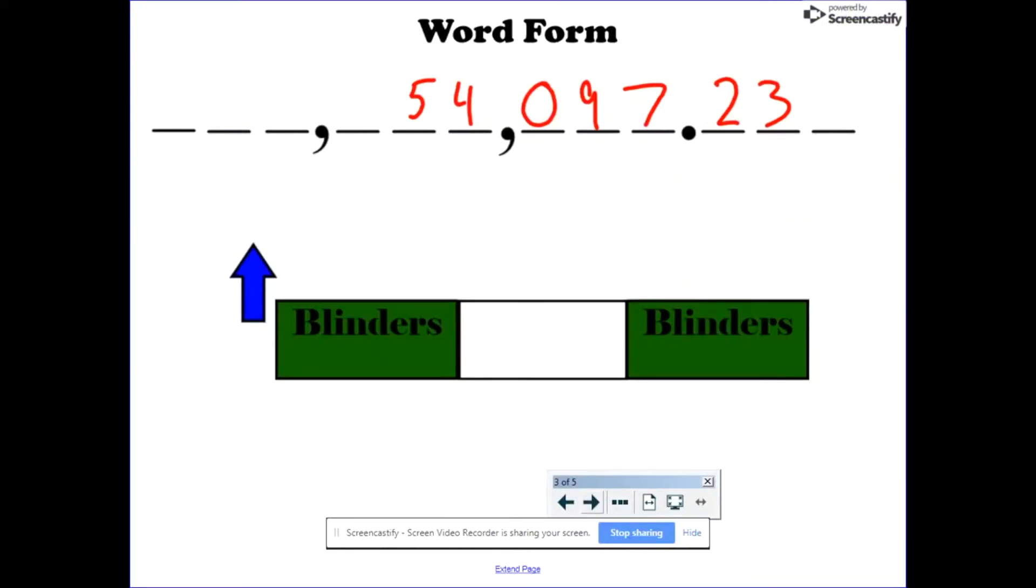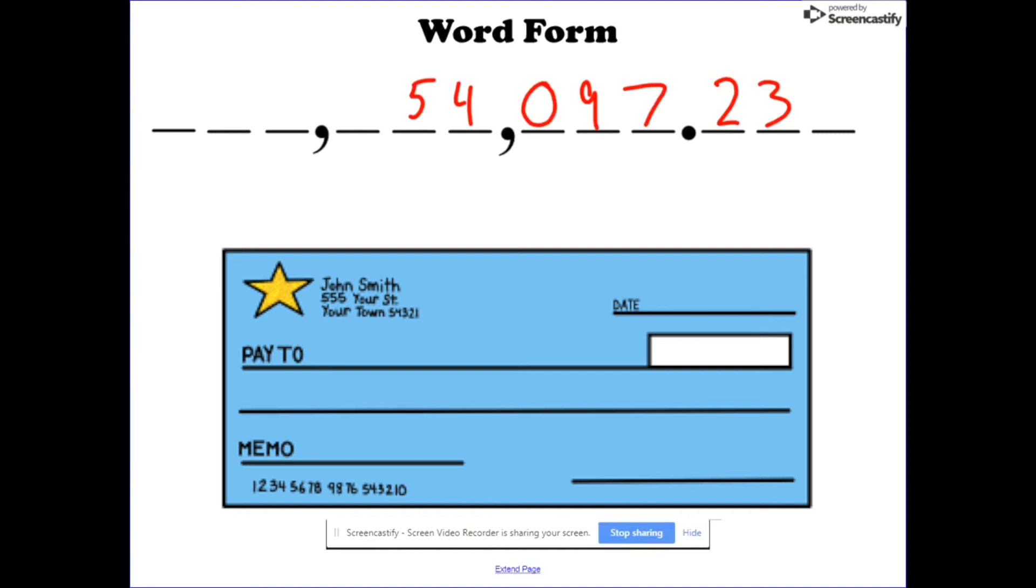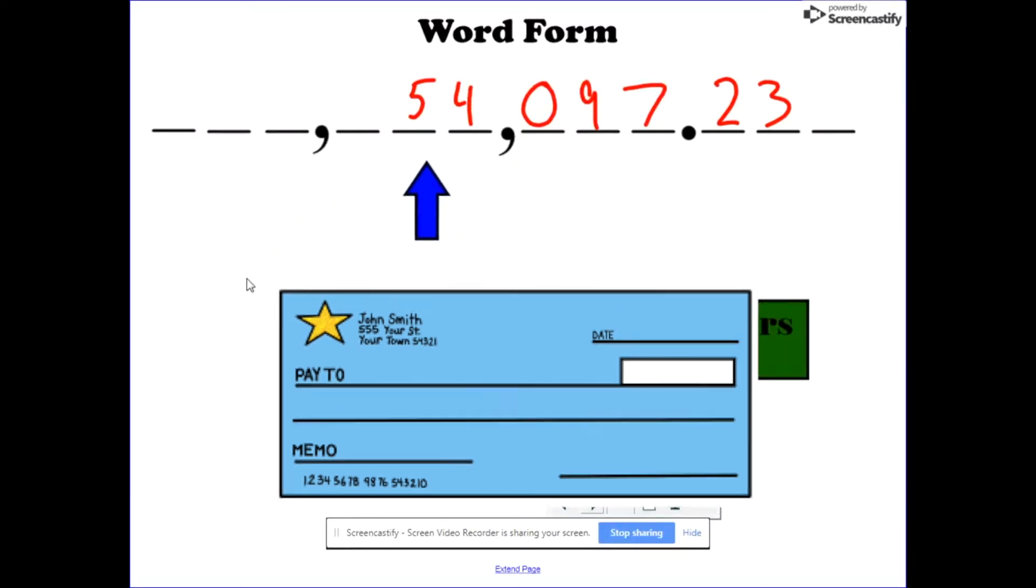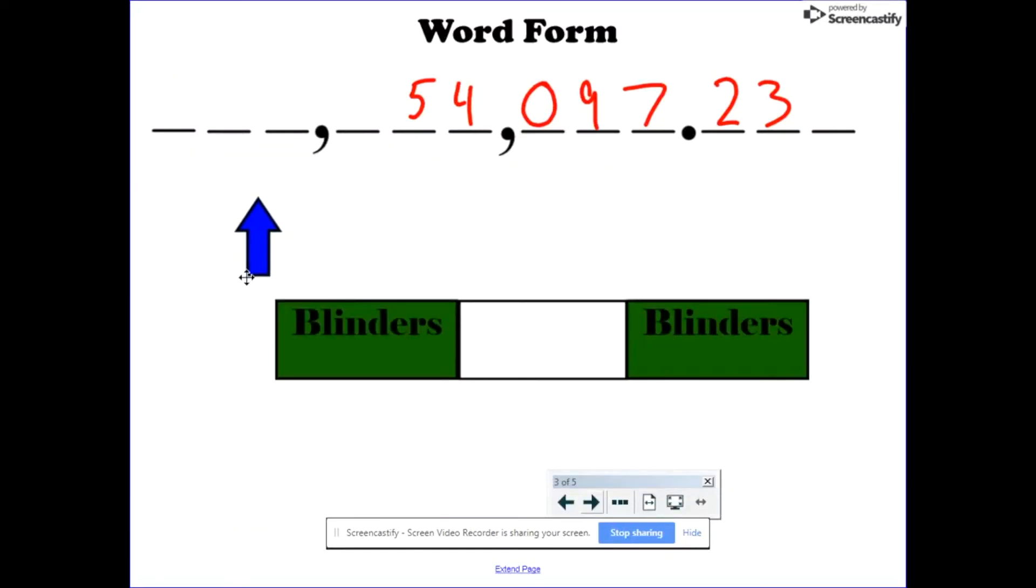Word form. Word form are just numbers written out using words. You might see this in literature, maybe some street signs. The place I see it most often is when I'm writing or receiving checks. You write your standard form in the little box on the right. And on the line, you have to write that number in word form. If we're saying this number, it's fifty four thousand ninety seven and twenty three hundredths. And that's the nice part about word form is that you write it out however you say it.